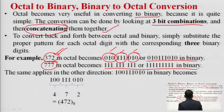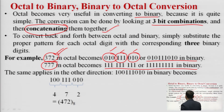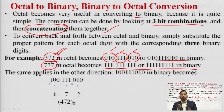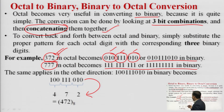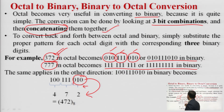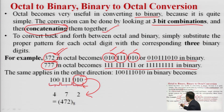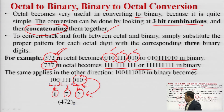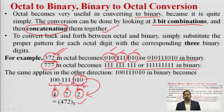For binary to octal conversion, we group the binary bits in sets of 3 starting from the right. Each group of 3 bits is converted to its octal digit. For example, grouping gives groups corresponding to 4, 7, and 2, so the result is 472 at base 8. This is how we convert a binary number into octal.